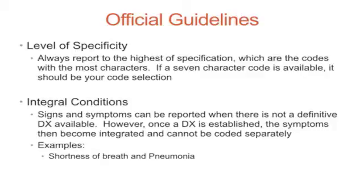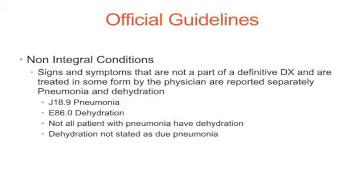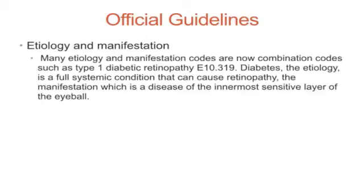Examples: Shortness of breath is integral to pneumonia and cannot be coded separately once pneumonia is the diagnosis. Non-integral conditions are signs and symptoms that are not part of a definitive DX and are not treated by the physician; these are reported separately. For example, dehydration (E86.0) with pneumonia — not all patients with pneumonia have dehydration, and dehydration not stated as due to pneumonia is coded separately. Many etiology and manifestation codes are now combination codes, such as Type 1 diabetic retinopathy — diabetes is the etiology, a full systemic condition that can cause retinopathy, the manifestation, which is a disease of the innermost sensitive layer of the eyeball.